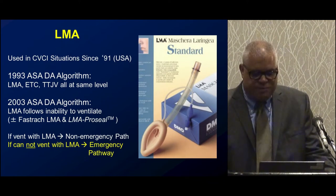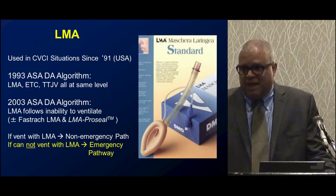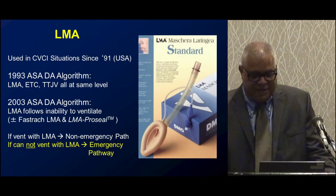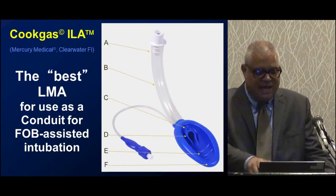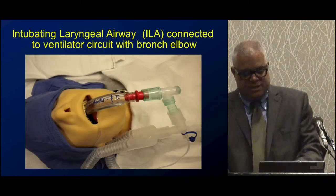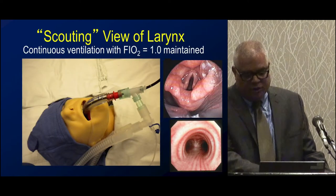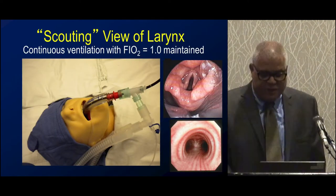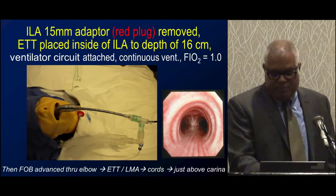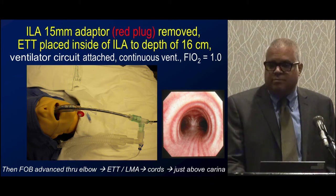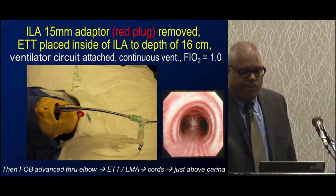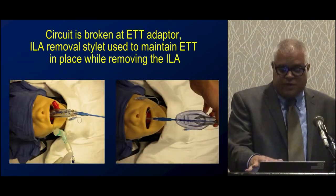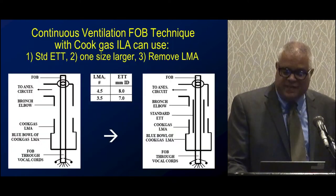LMAs and supraglottic airways have been around since the early 90s and are documented to improve survival in cannot-intubate, cannot-ventilate situations. Flexible bronchoscopy can be placed through an LMA—you look down, get a view of the cords, then pass an endotracheal tube through the same port to establish a more permanent airway. Placing an LMA does not mean giving up on a definitive airway. The Cook LMAs used here accommodate large endotracheal tubes: a size 4.5 takes an 8.0 tube, and a size 3.5 takes a 7.0 tube.